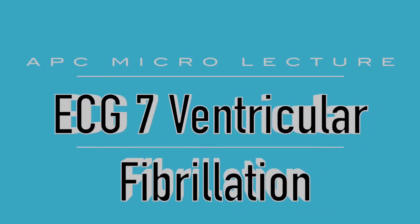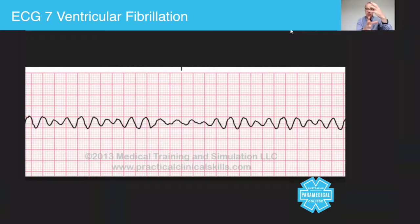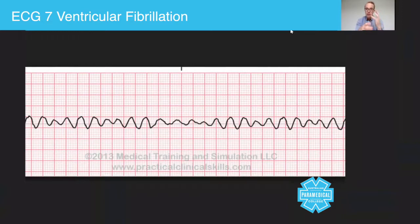In today's micro lecture we're going to talk about ventricular fibrillation. Ventricular fibrillation is exactly as the name suggests — it's when the ventricles of the heart are quivering instead of contracting forcefully. This hand represents the atria, the top chambers of the heart, and this hand represents the ventricles. Instead of the heart contracting rhythmically, you have a situation where the heart is completely quivering rather than contracting.